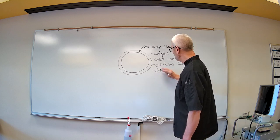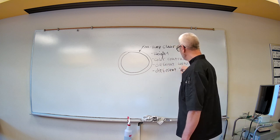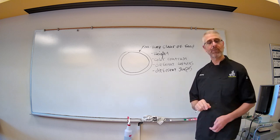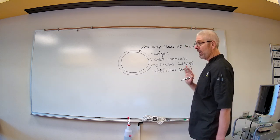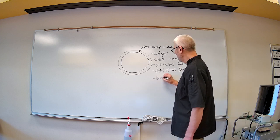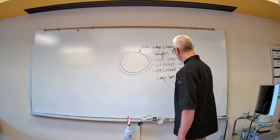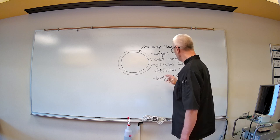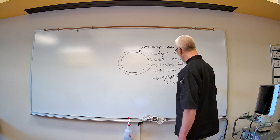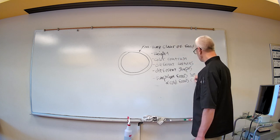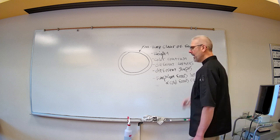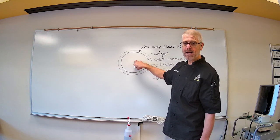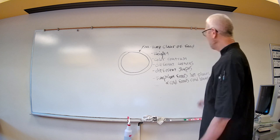Different shapes — we don't want all circles or all squares; we want different shapes to our food. And I'm a stickler about this: keep hot foods on hot plates, and cold foods on cold plates. That's huge. So if you're serving a salad on a plate, the first thing you need to do is put your plate in the refrigerator so it cools off, keeping your salad crisp and cold.